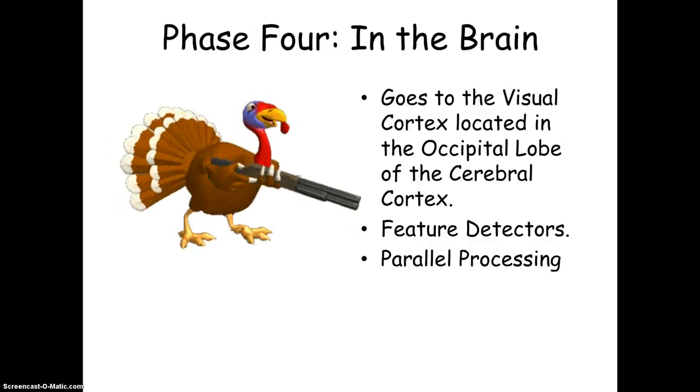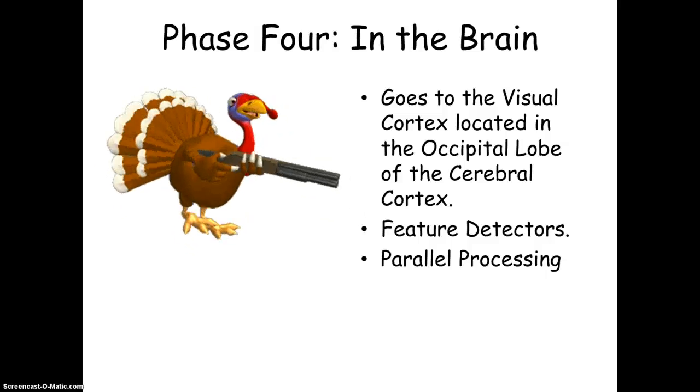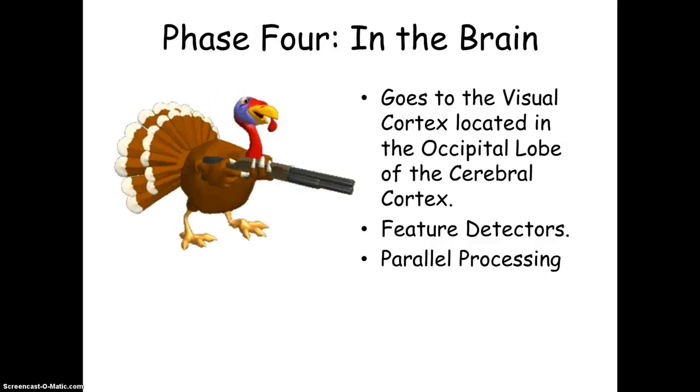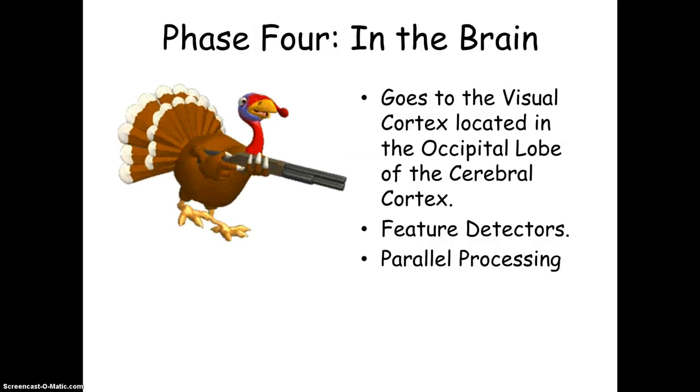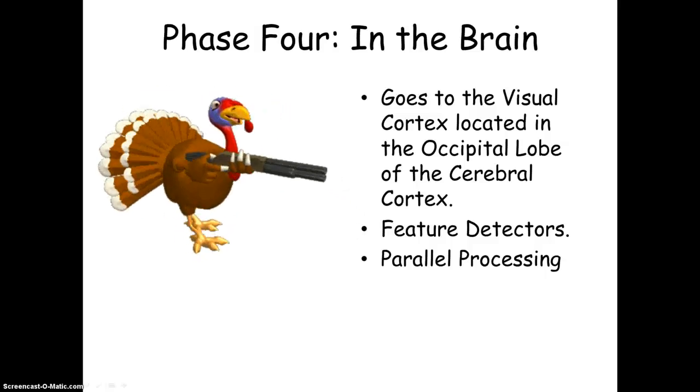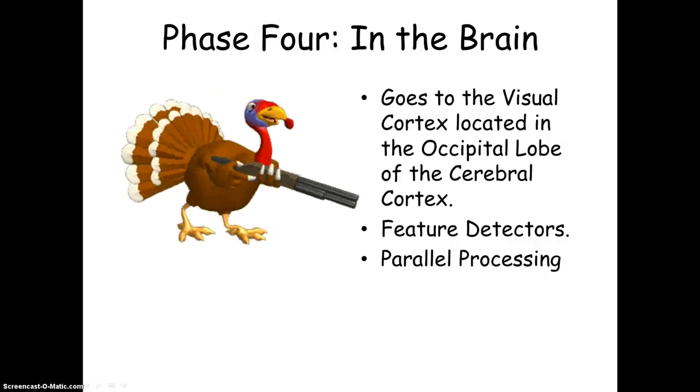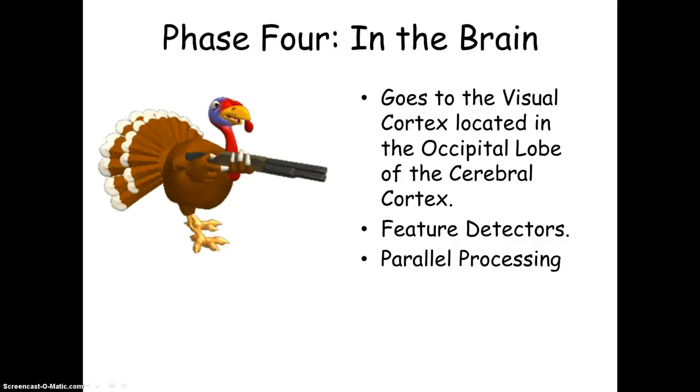And they found that these feature detector cells get their name from their ability to respond to a scene-specific feature. So there are specific cells that are, their primary purpose is just for paying attention to edges or lines or angles or movements. There are specific cells that do each of these specific jobs. So Hubel and Weisel found those things and won the Nobel Prize back long ago, back in 79.